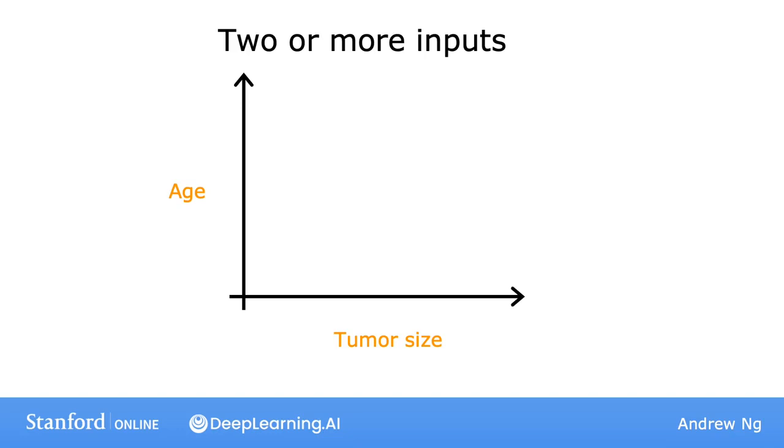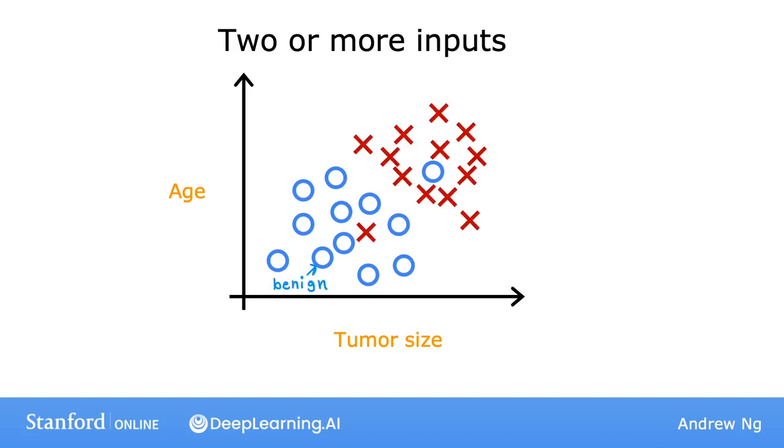Plotting this new dataset, we're going to use circles to show patients whose tumors are benign, and crosses to show the patients with a tumor that was malignant. So when a new patient comes in, the doctor can measure the patient's tumor size and also record the patient's age. And so given this, how can we predict if this patient's tumor is benign or malignant?